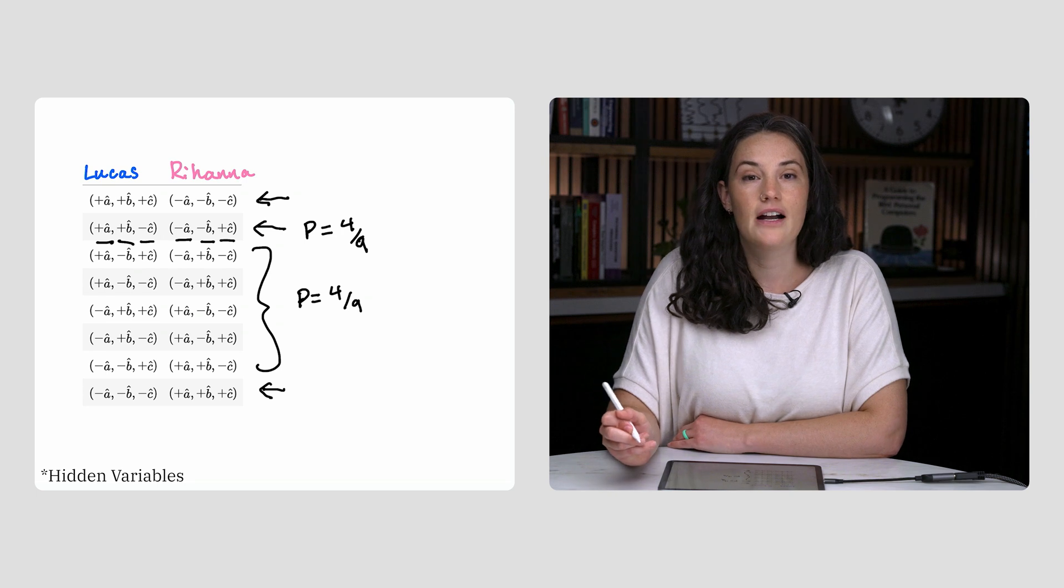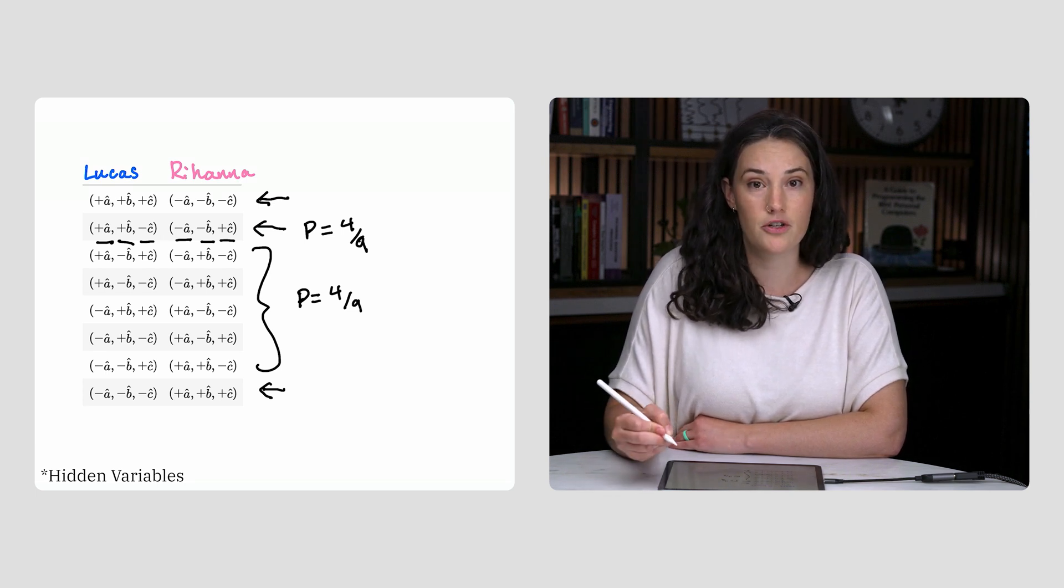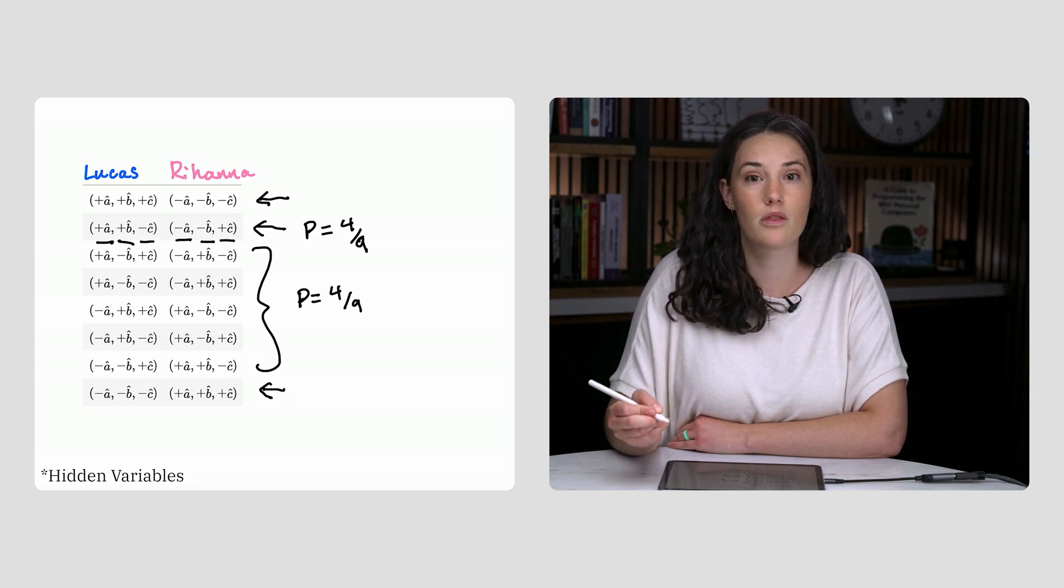This means that if Einstein is right and hidden variables like these predetermine the outcome of measurements, there's no way for Lucas and Rihanna to ever measure the same sign with probability greater than 4 ninths.